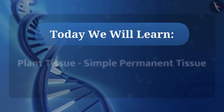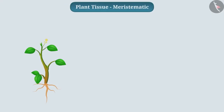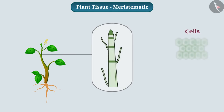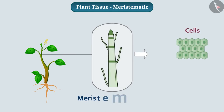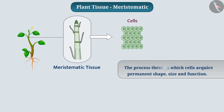Today we will learn about plant tissue — simple permanent tissue. In the previous video, we learned that the cells of meristematic tissue keep dividing throughout their life. But as they grow and mature, their properties gradually change. After complete growth, these cells perform a specific function at a specific location and lose the power to divide. To perform a specific function, the cells acquire permanent shape, size, and function. This process is called differentiation. Such cells form permanent tissue.